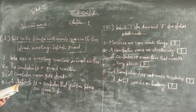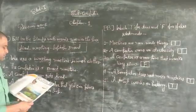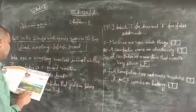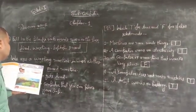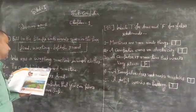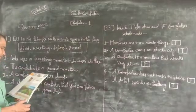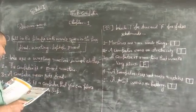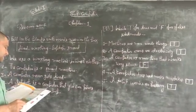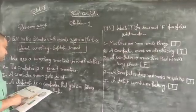Look at the pictures below. You can see many things around us. There are many things in this picture which are not natural. Identify such things and write their names in the given space.